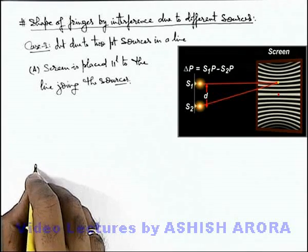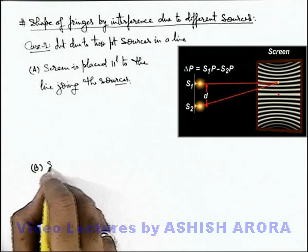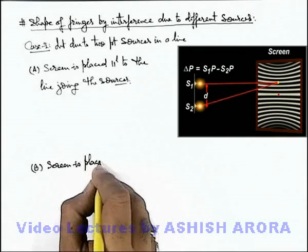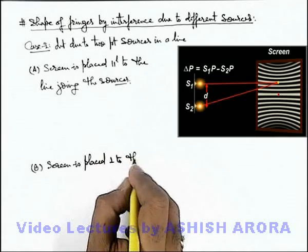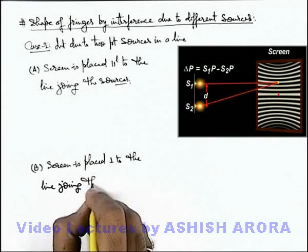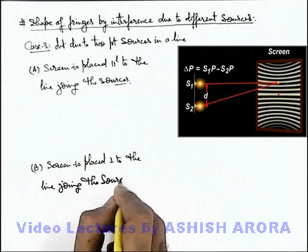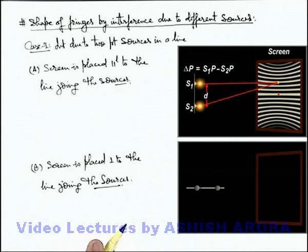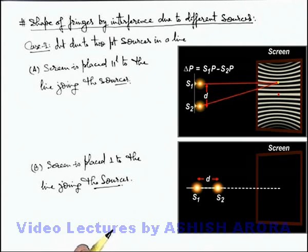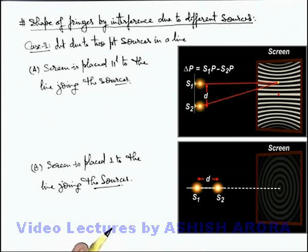If we consider the second situation, that is when the screen is placed perpendicular to the line joining the sources, here you can see that when the sources are switched on, circular shaped fringes are obtained on the screen.